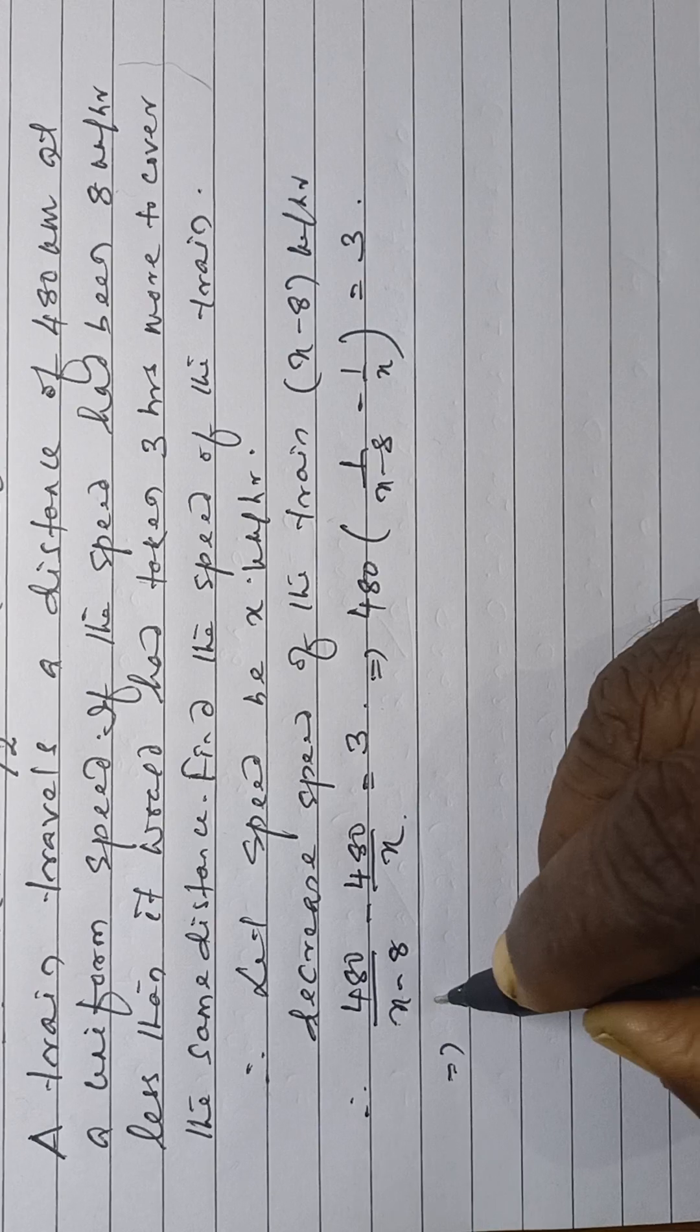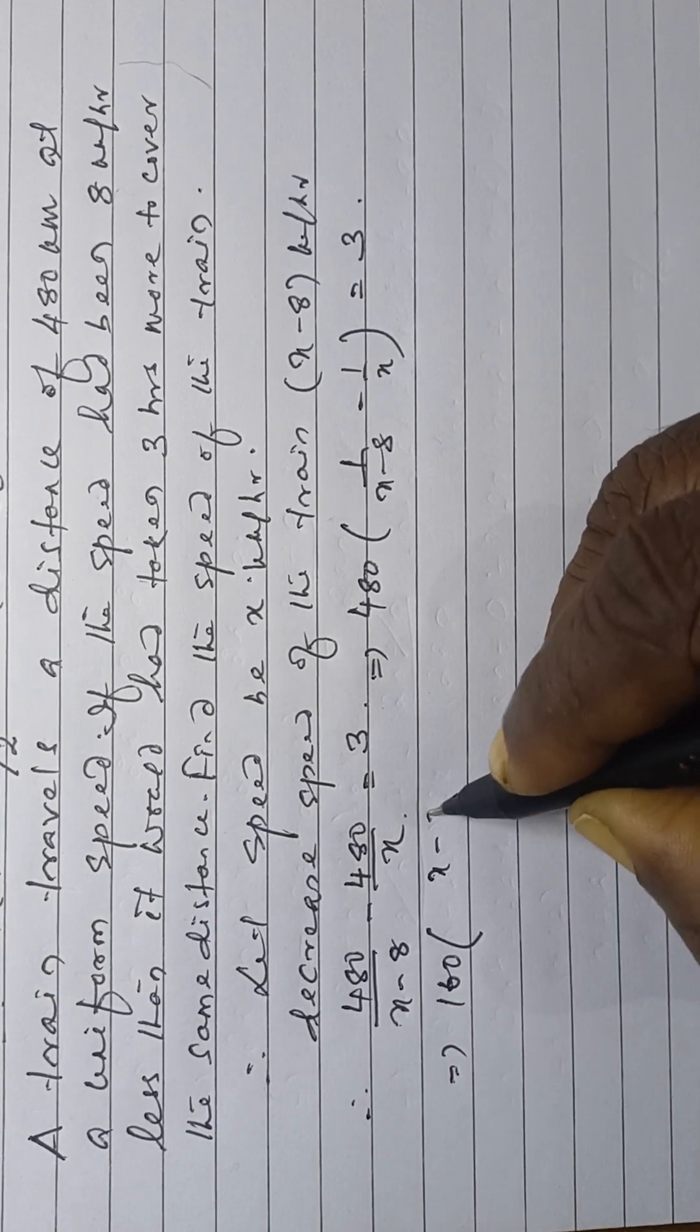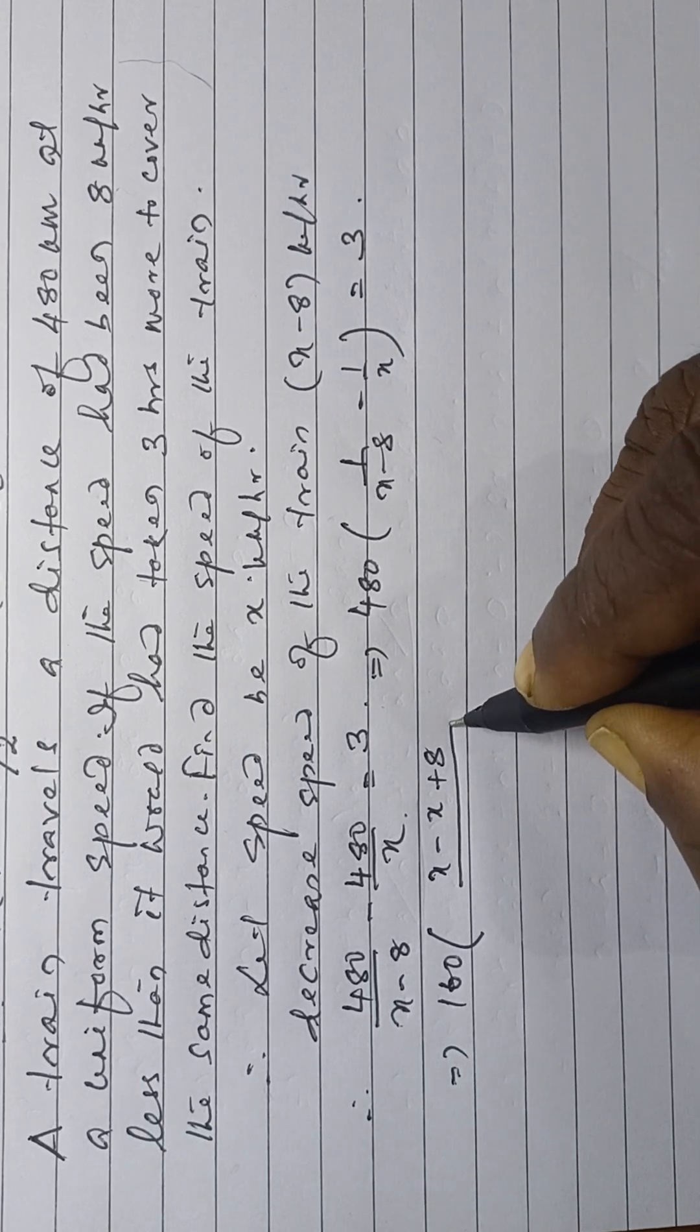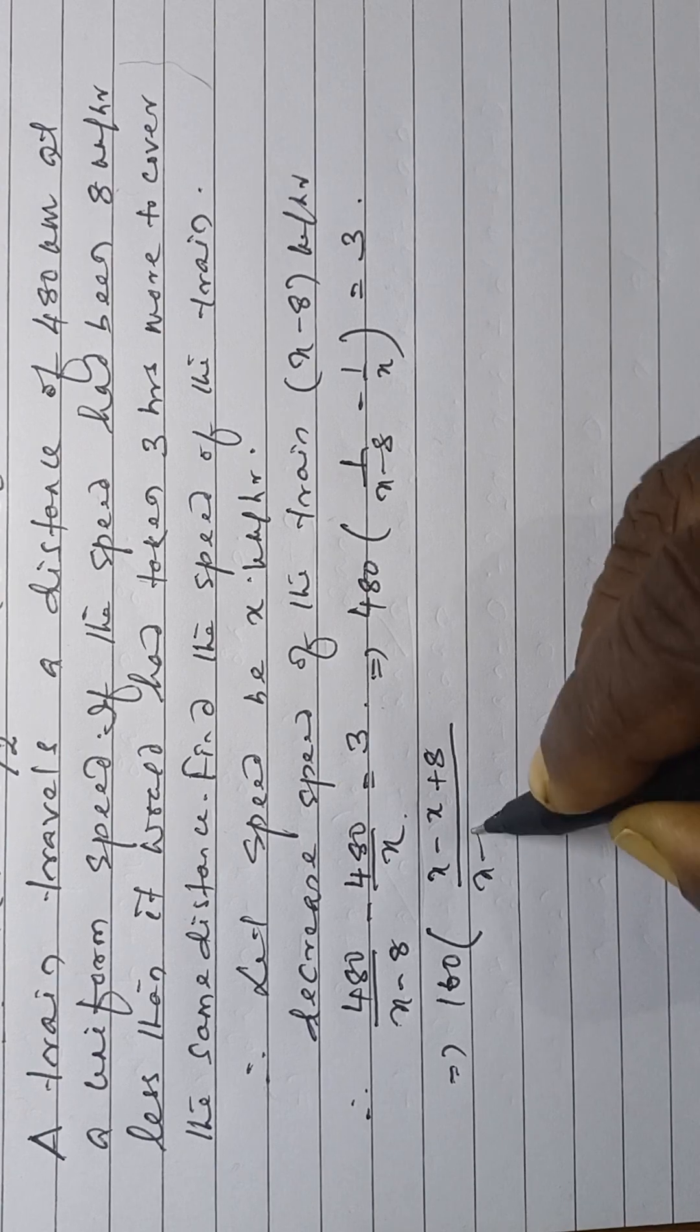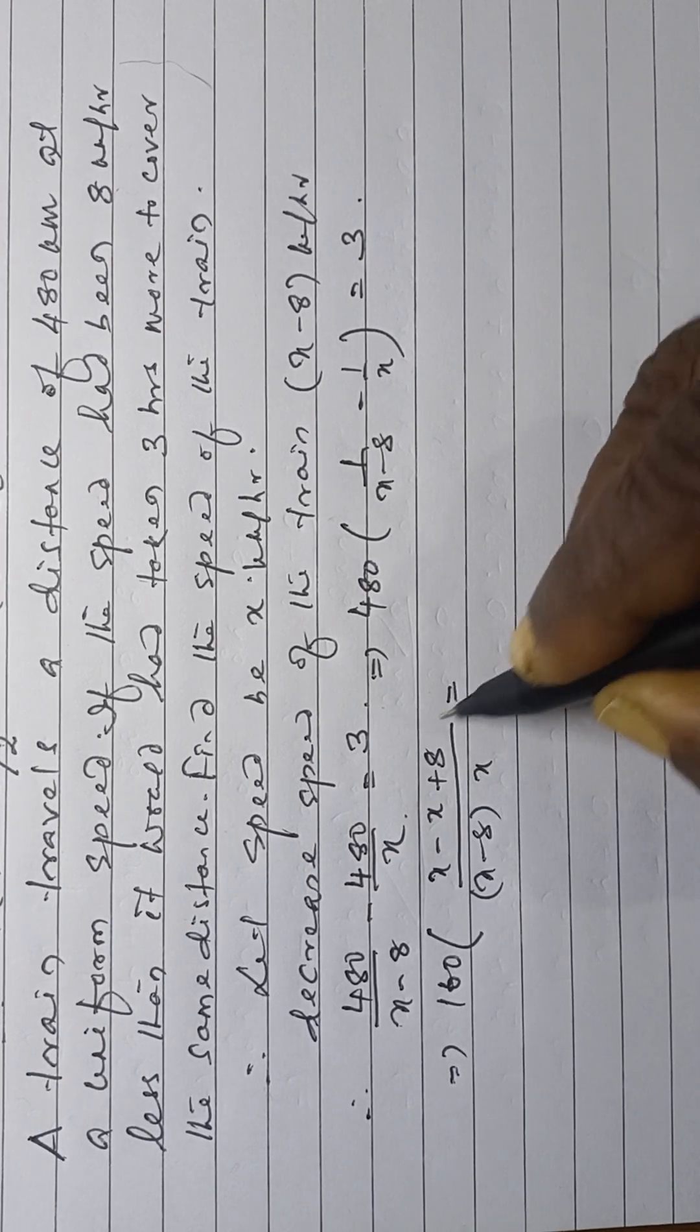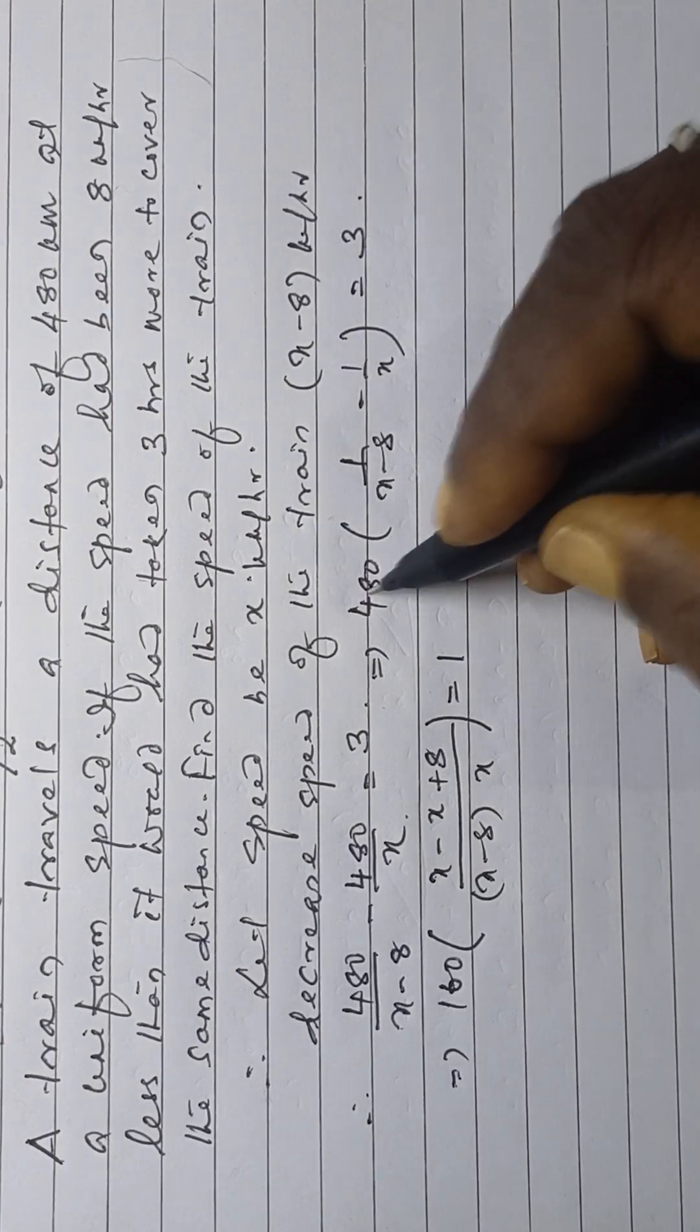Then, this is 160 into x minus x plus 8 divided by x minus 8 into x is equal to 1, cancelling 3.